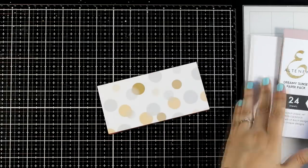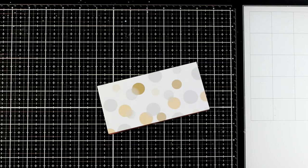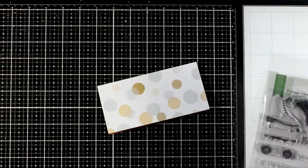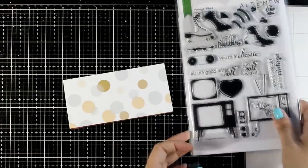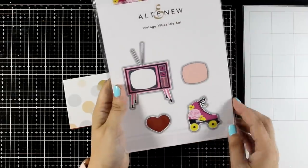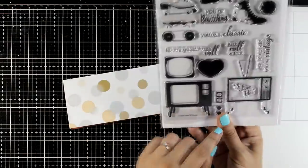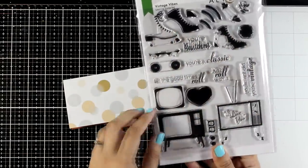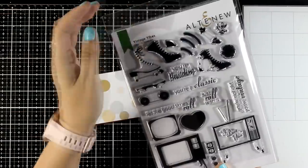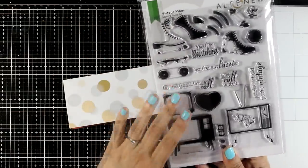So you see I have a card base ready to go, it does have interest on the background and all you have to do is just stick a focal point and a sentiment. So for this card I decided to go with the TV, this is from a new stamp set by Altenew which is called Vintage Vibes. It is a layering stamp set that helps you create a TV as well as rolling skates which I am going to use for the next card as an example.